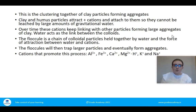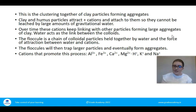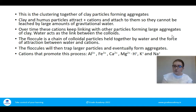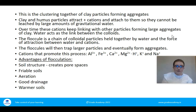The cations that promote flocculation are aluminium, iron, calcium, magnesium, hydrogen, potassium, and sodium. Calcium is one of the better ones, but any of them will promote flocculation. If you add any of these cations to a soil with high clay or humus content, flocculation will occur and clumps of soil will form.